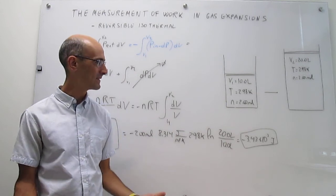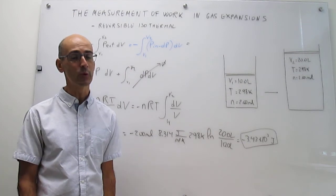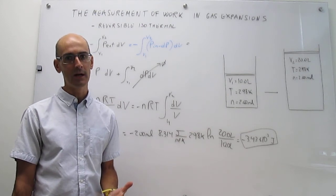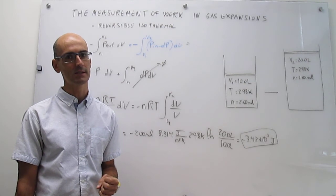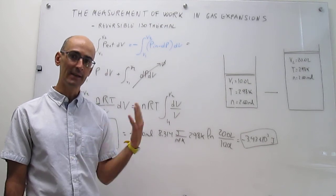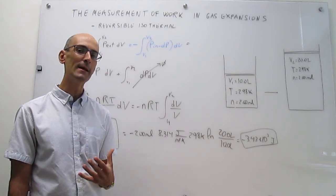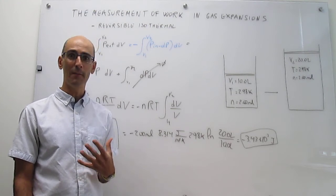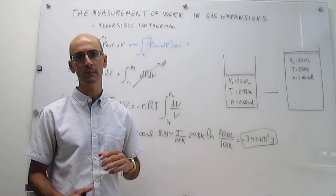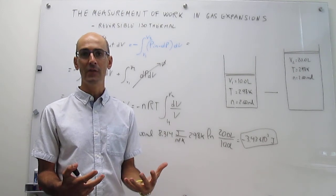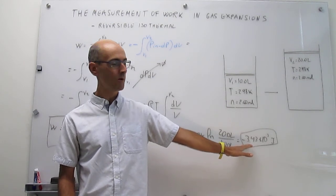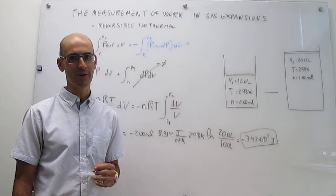To wrap up: reversible gas expansions, and reversible processes in general, tend to be idealized processes that are impossible to actually carry out. However, in the case of a reversible gas expansion, it provides an upper limit — a benchmark — for the maximum work you can get. In reality, when you carry out a gas expansion, you devise a procedure that tries to get as close to this number as possible. You will never be able to exceed it, but the closer you get, the better your gas expansion is.